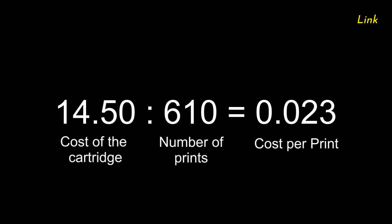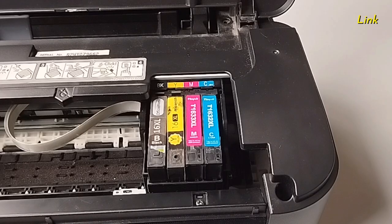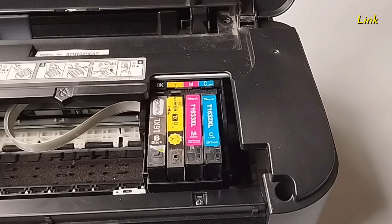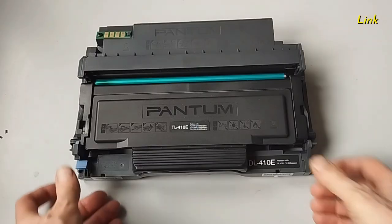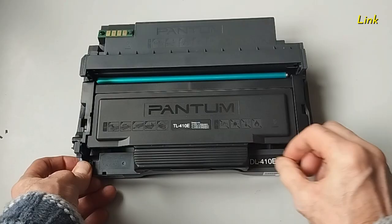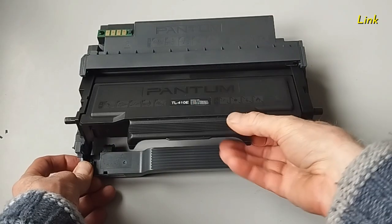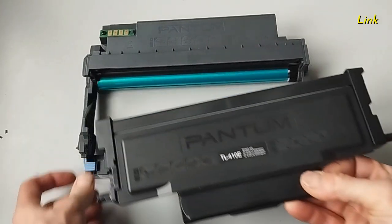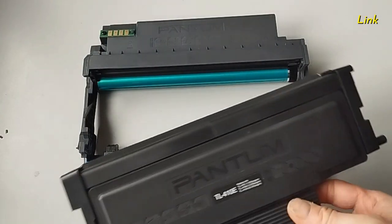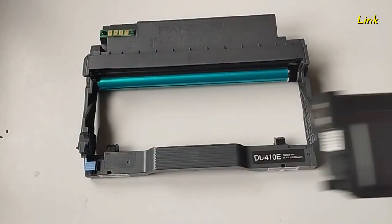Dividing the cost of the cartridge by the number of pages gives you the real cost of printing for that cartridge. In the case of a color printer, the operation must be repeated for each cartridge. When the toner cartridge is separate from the drum unit, the cost per copy of the drum unit must also be added.